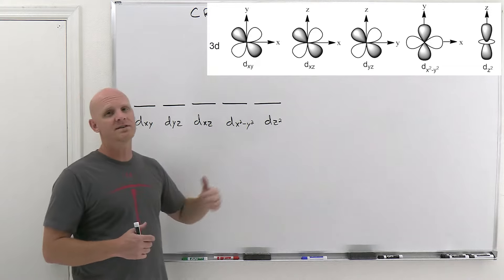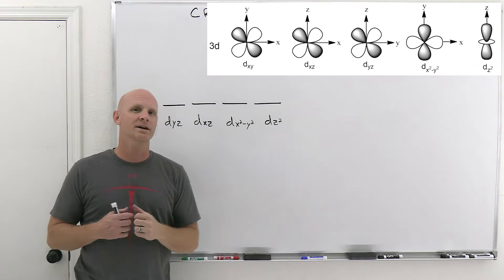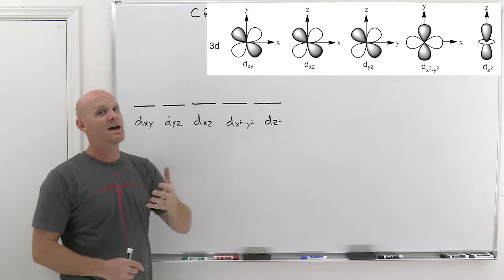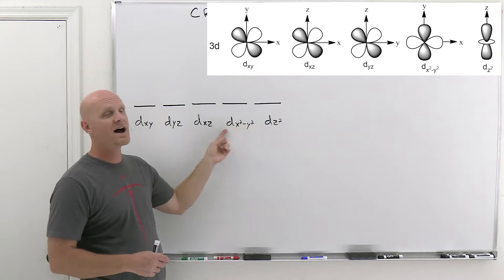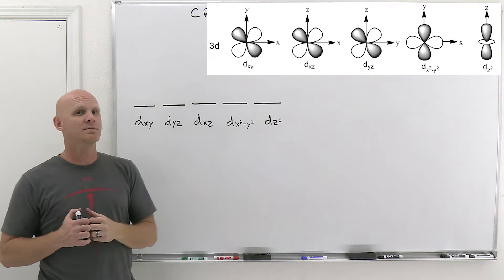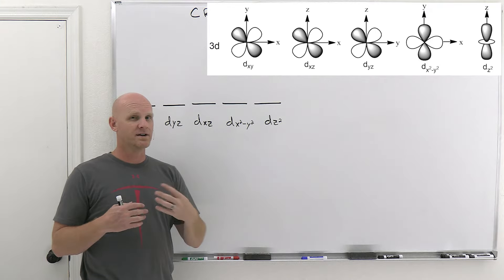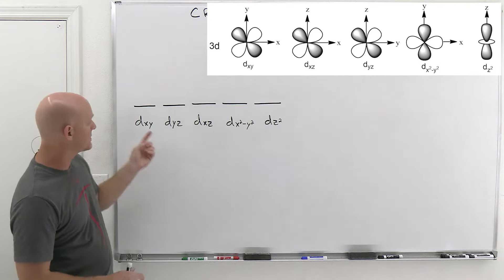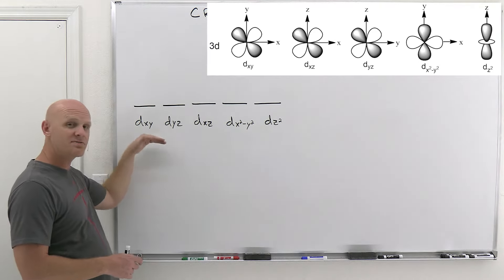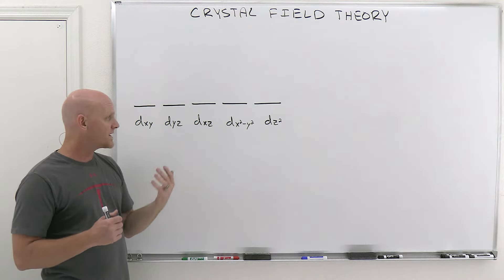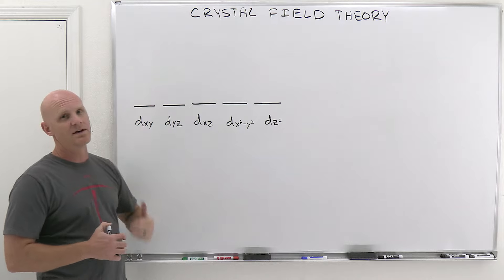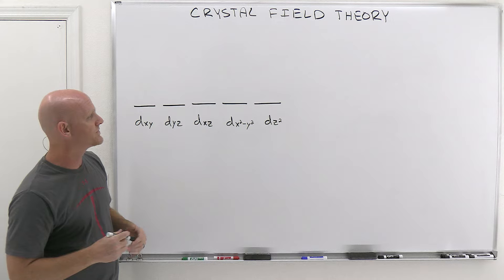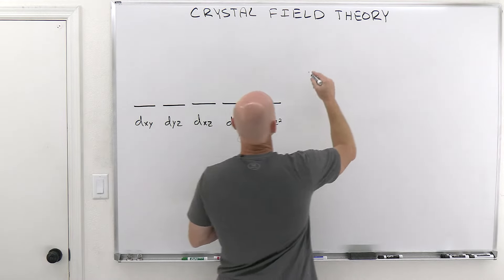When electron density gets in the way of approaching ligands, those orbitals shift to higher energy. In an octahedral complex, ligands come in on the axes, so dx²−y² and dz² shift to higher energy. In a tetrahedral complex, the four ligands bind in between the axes at 109.5° apart, so dxy, dyz, and dxz shift to higher energy instead. Either way, the five degenerate d orbitals split into two energy levels.